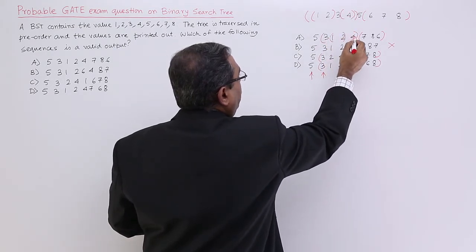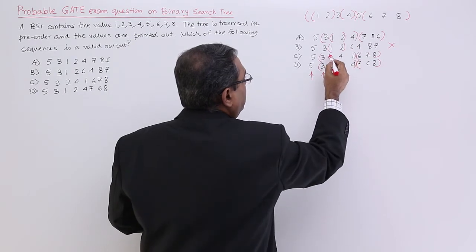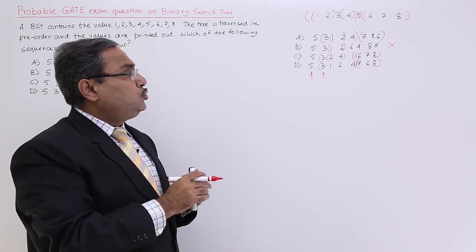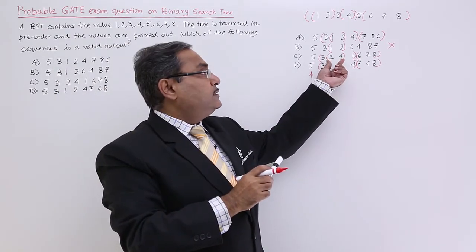So yes, it is 1, 2 and 4. It is 1, 2 and 4. Sorry, I should not consider this one. This is 1, 2 no, this option is also not there. So that is why this 1, 2 should come in a cluster. This 1, 2 should come in a cluster. But that is not the case.